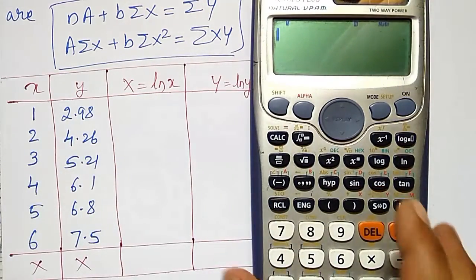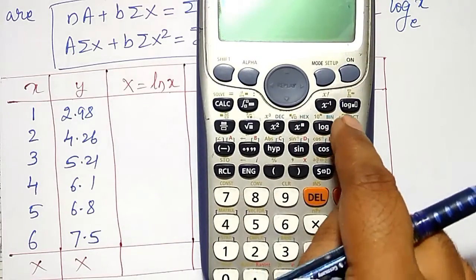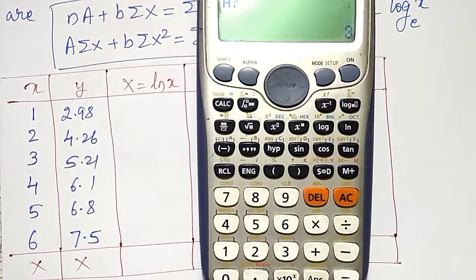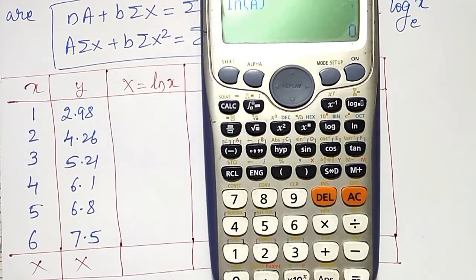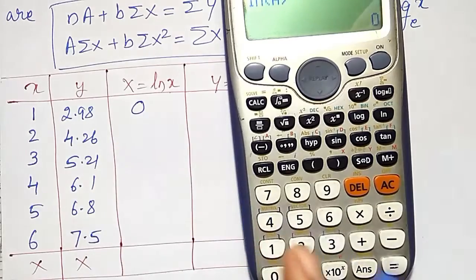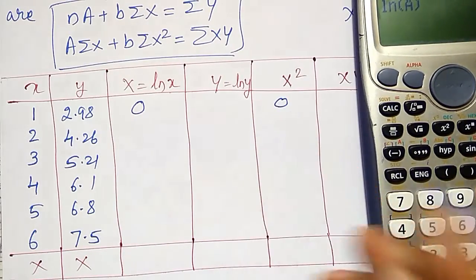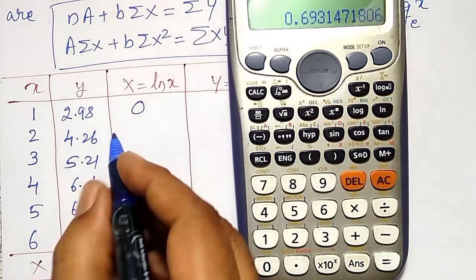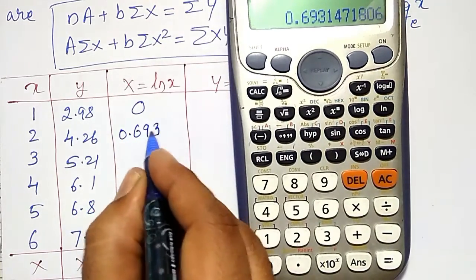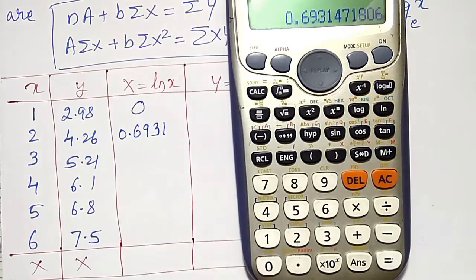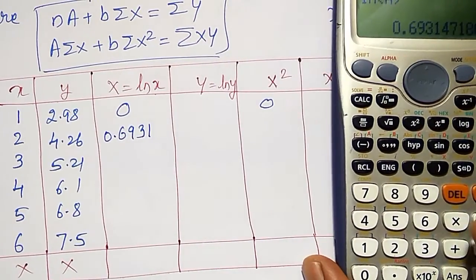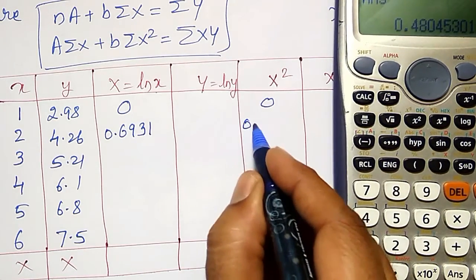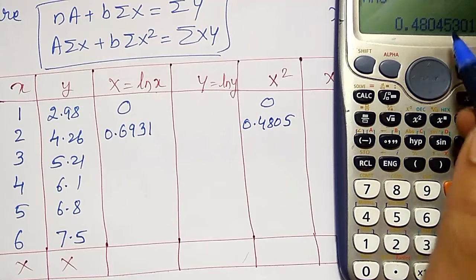For log x, instead of operating ln every time, I will use only once. That is ln of alpha a, calc option, my a value is x which is 1, equal to, it is 0. Simultaneously x square also I can calculate, it is also 0. Now x equal to 2, equal to, and it comes out to be up to 4 decimal places 0.6931. Then its square, I can use answer square, equal to 0.4805.